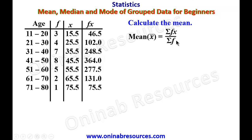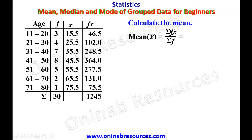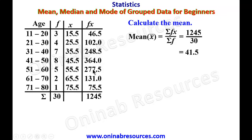We sum up the column for fx and the column for f. The sum of the frequencies gives 30, and the sum of fx gives 1245. Substituting into the formula, summation of fx is 1245 divided by 30, which gives 41.5. This represents the mean of the distribution.